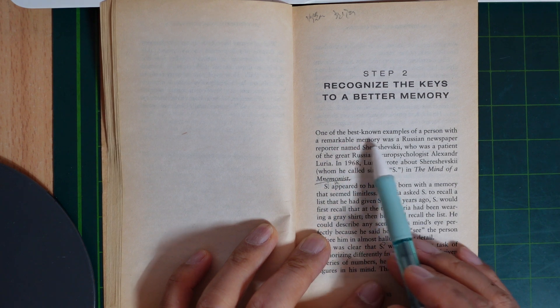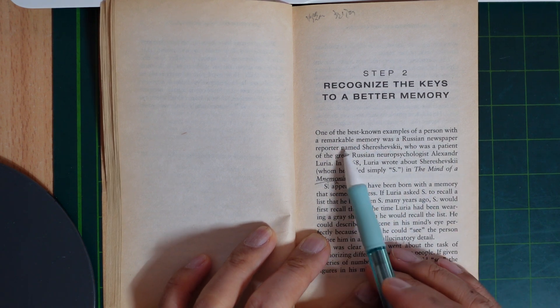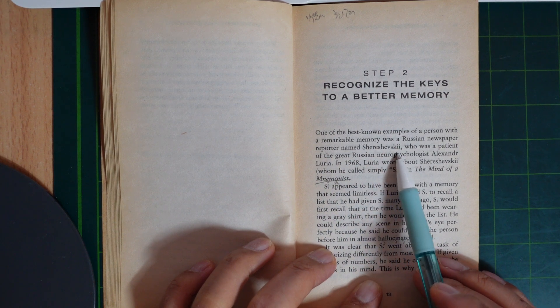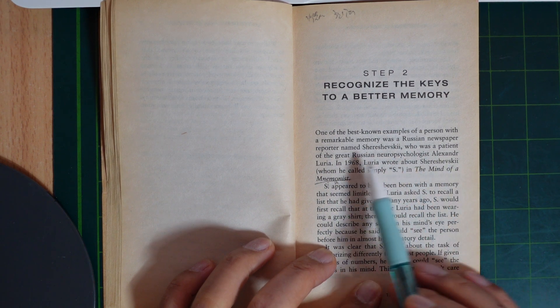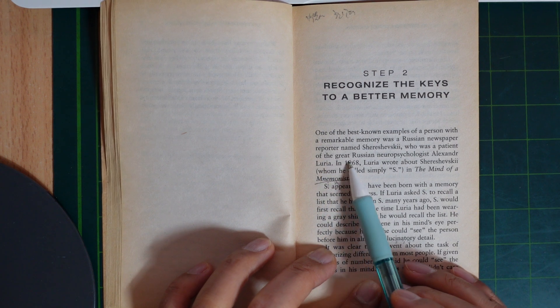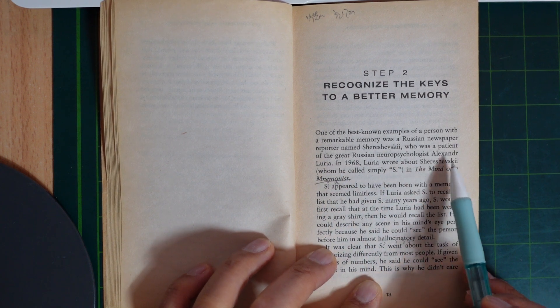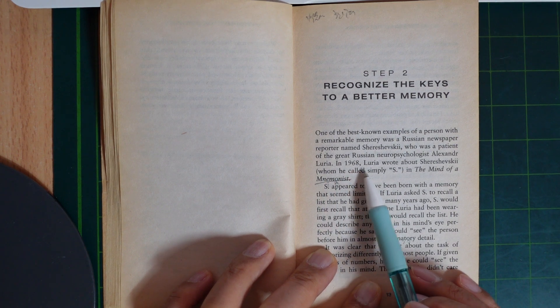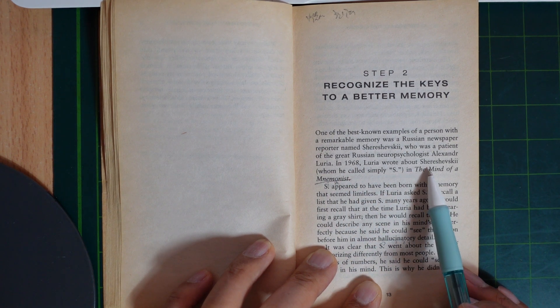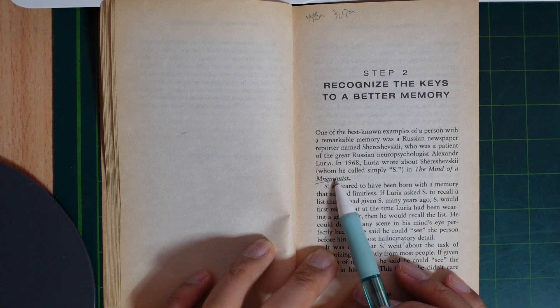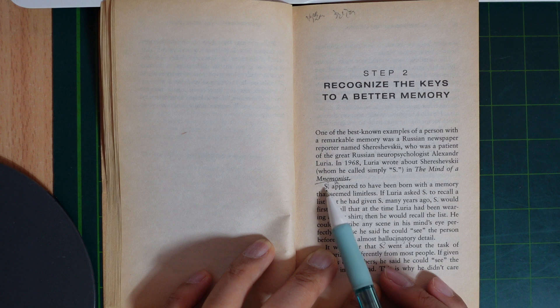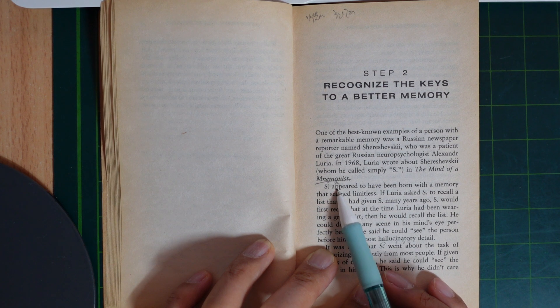One of the best known examples of a person with remarkable memory was a Russian newspaper reporter named Shereshevsky, who was a patient of the great Russian neuropsychologist Alexander Luria. In 1968, Luria wrote about Shereshevsky, whom he called simply S, in The Mind of a Mnemonist.